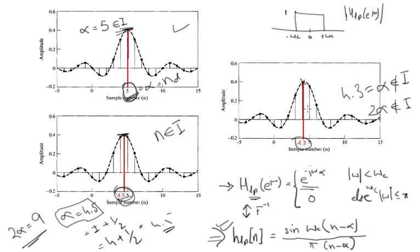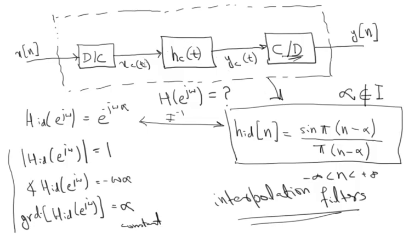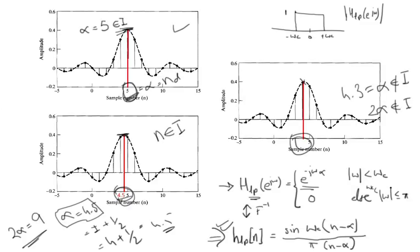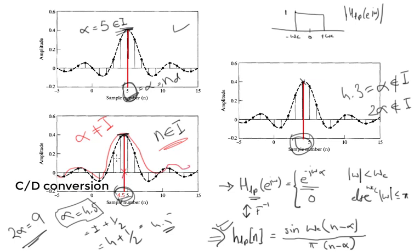From this, you can conclude: if α is not an integer, you first convert your impulse response to a continuous-time impulse response, then shift it, and digitize it again — then you will get the resulting waveform.